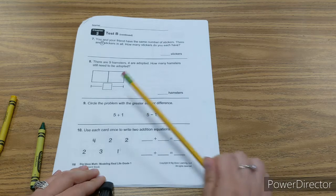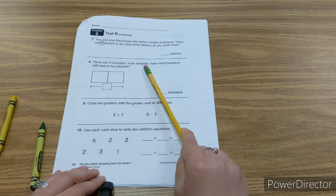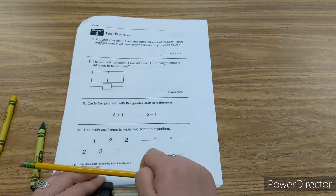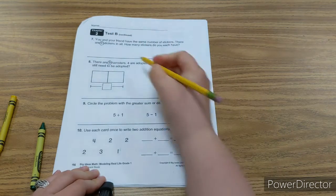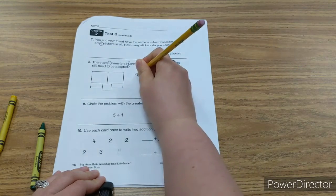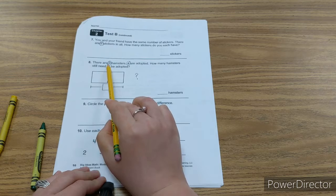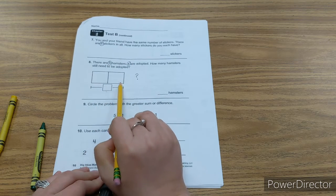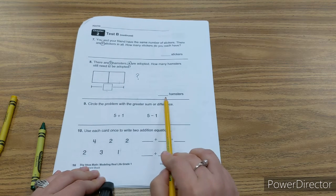There are nine hamsters. Four are adopted. How many hamsters still need to be adopted? So nine is your whole, four is one of your parts. You need to find your other missing part. How many hamsters still need to be adopted?